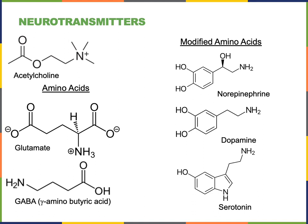Acetylcholine is one of the major neurotransmitters released by neurons in the peripheral nervous system. It is the neurotransmitter that stimulates the excitation of skeletal muscles, but acetylcholine is also an important neurotransmitter in the brain. Acetylcholine can be either excitatory or inhibitory depending upon the context.